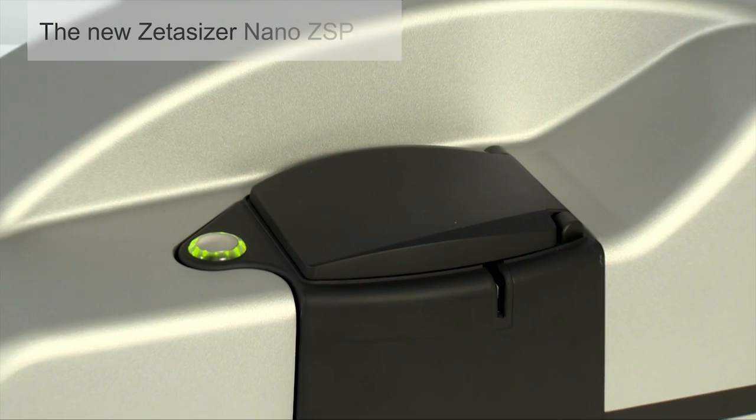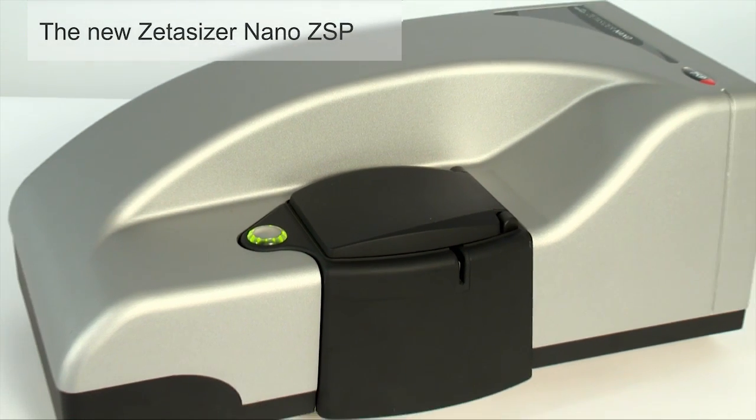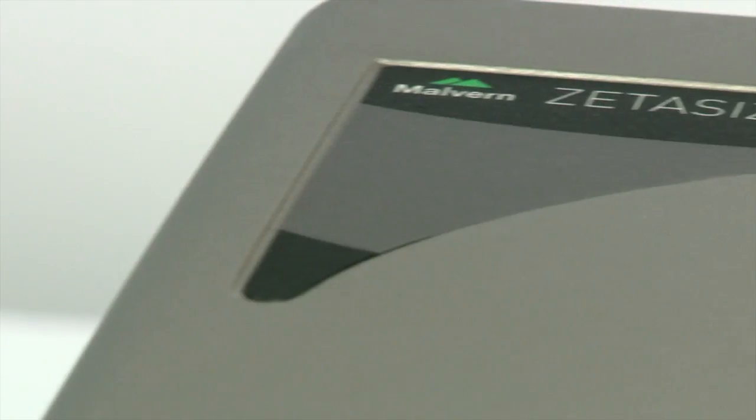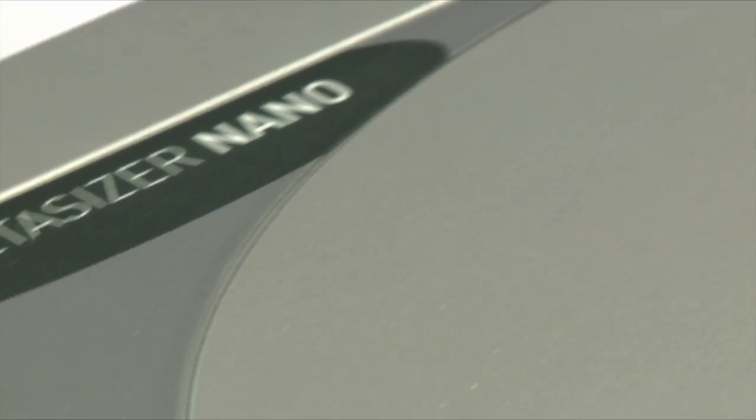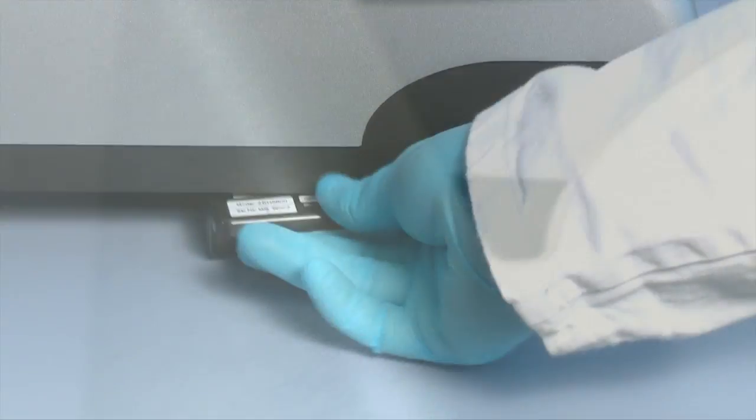The Zetacizer Nano ZSP is a new premium addition to the Zetacizer Nano range. This video demonstrates how the tenfold increase in Zeta potential sensitivity is used with the new protein mobility measurement type to reliably measure protein mobilities and calculate protein charge.